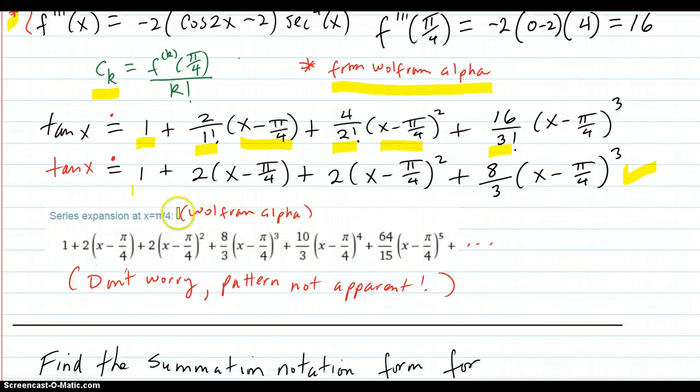Wolfram Alpha says that the series expansion of tangent x at x equals π over 4 is this. That lines up our first four terms and they keep going a few more terms. Don't worry about trying to get the pattern for this one. I would not ask this on a test because the pattern is not apparent at all.